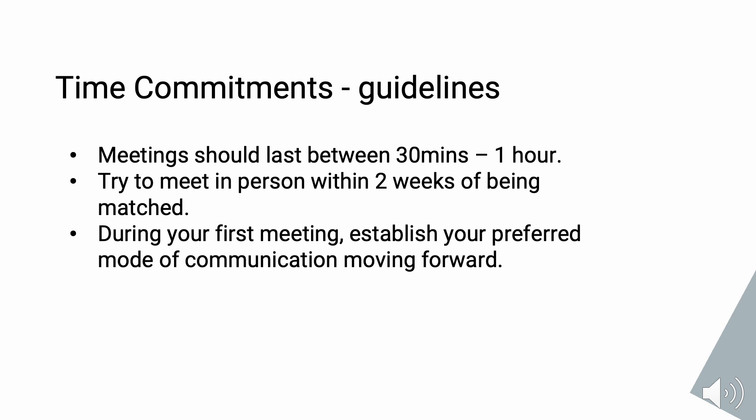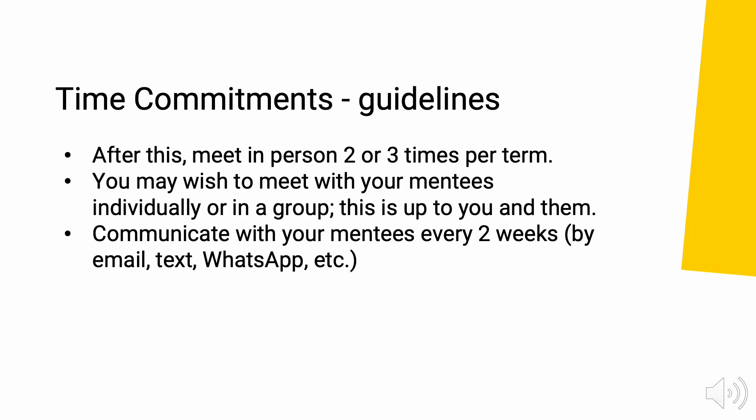Next, time commitments. It is up to you as the SAM and your mentees to decide how often you wish to meet up and communicate, but these are general guidelines. Meetings should last between 30 minutes and 1 hour. Try to meet in person within 2 weeks of being matched, but this can be virtually if in person is not possible or preferred. During your first meeting, try to establish your preferred mode of communication moving forward. After that first meeting, it is a good idea to meet or have a proper catch up 2–3 times a term. You may wish to meet your mentees individually or in a group. Communicate with your mentees every 2 weeks by email, text, WhatsApp, etc. This could just be a quick check-in to see if everything is ok — the sort of 'I am here and I can help if needs be' message.